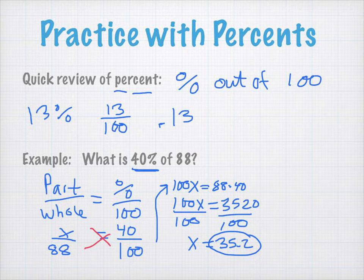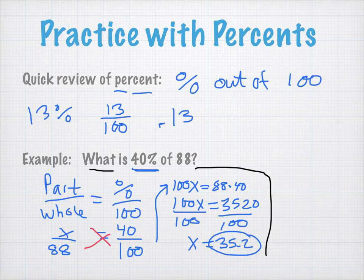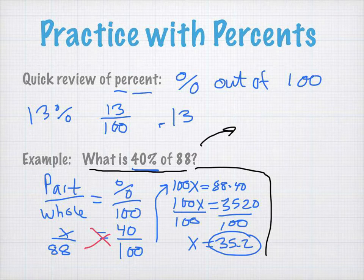The other way, if I can just mark this off here, is to just use algebra. If I were to take this sentence here, what is 40% of 88, and translate that into a mathematical statement, we go left to right. What, we can replace. We don't know what that is. In algebra, if we don't know what something is, we put a variable in its place. So, what, we don't know. We'll put x.